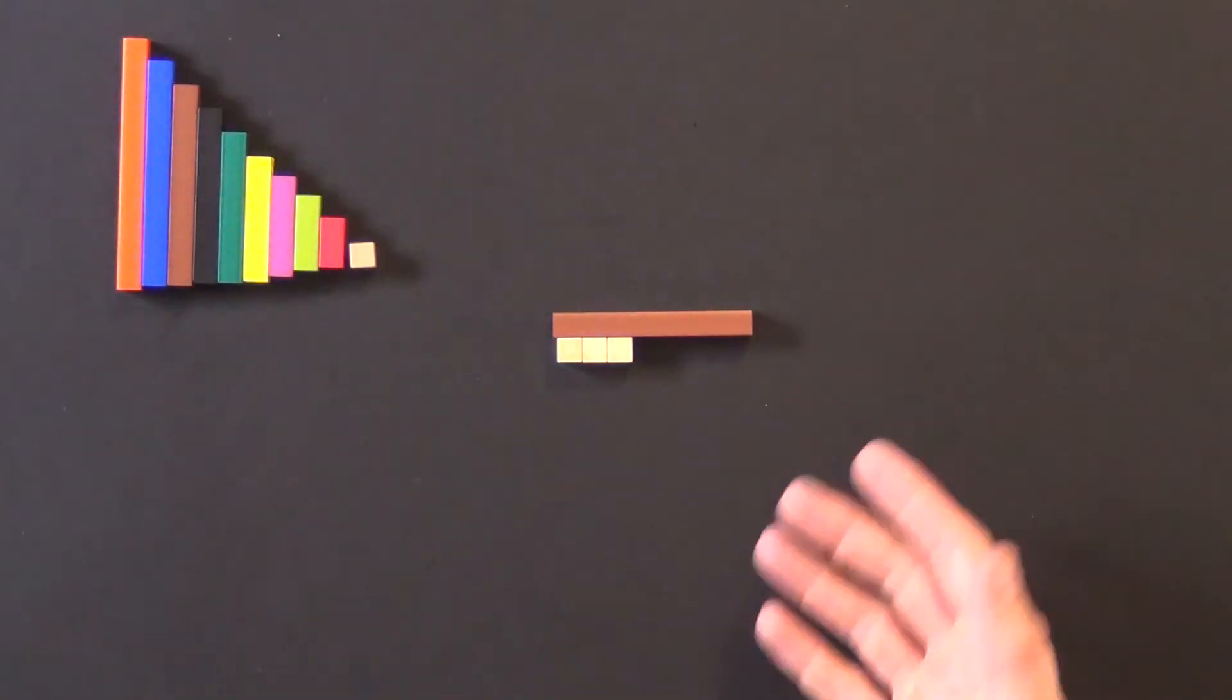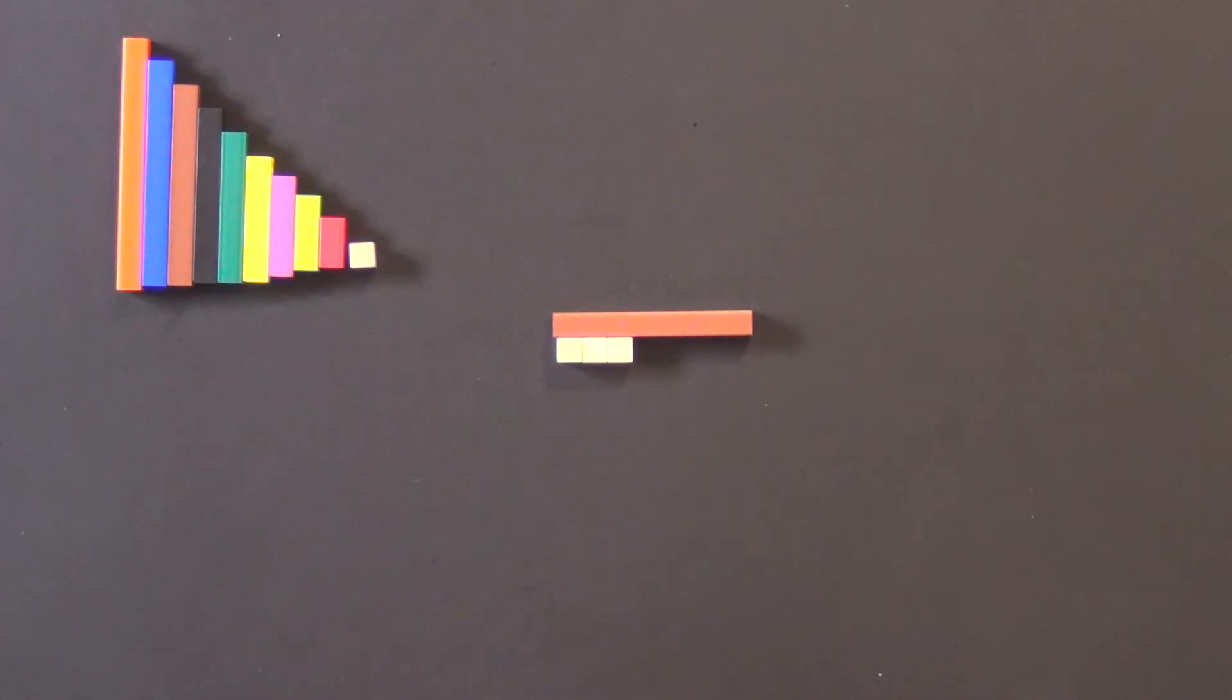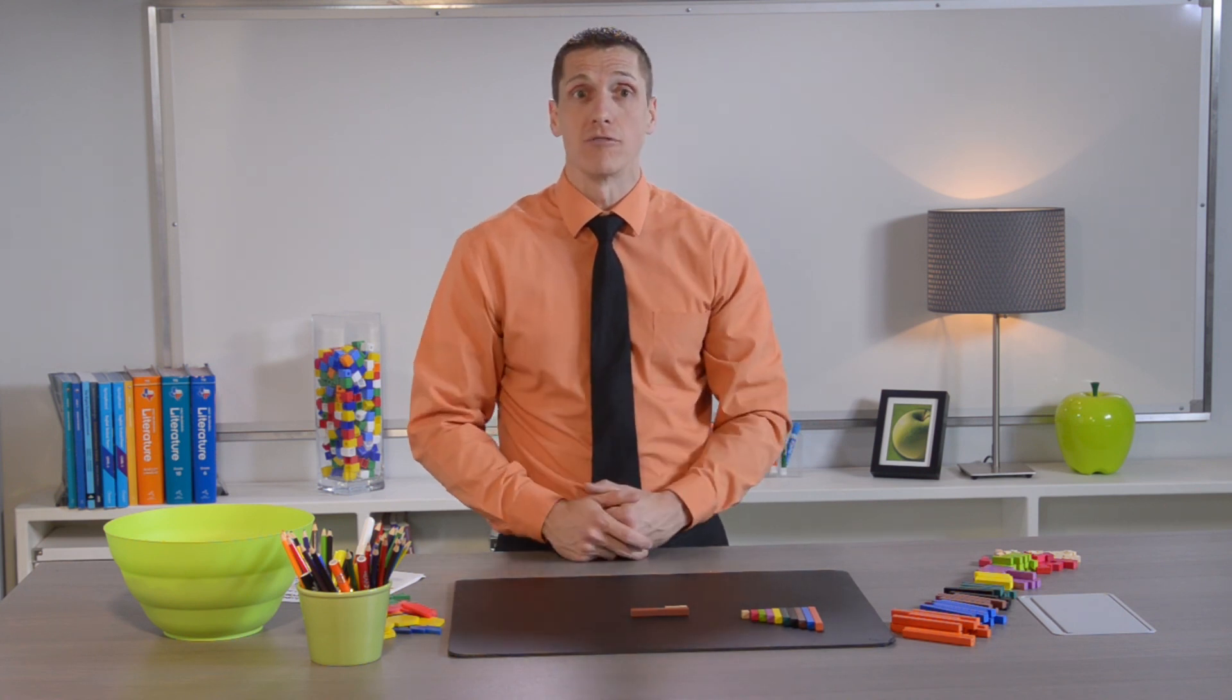So my preference really is the Cuisenaire rods over the pattern blocks because we have a rod for every number and then rods can be combined together for larger numbers. So if I had to represent a fraction greater than ten, I could using the colored rods.